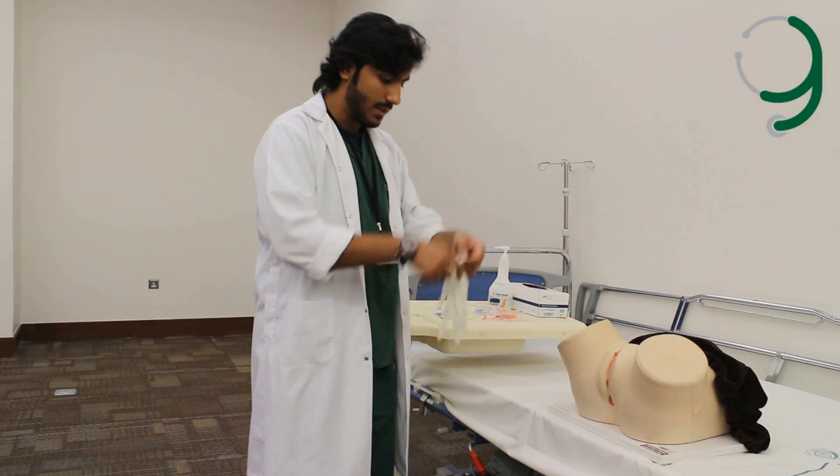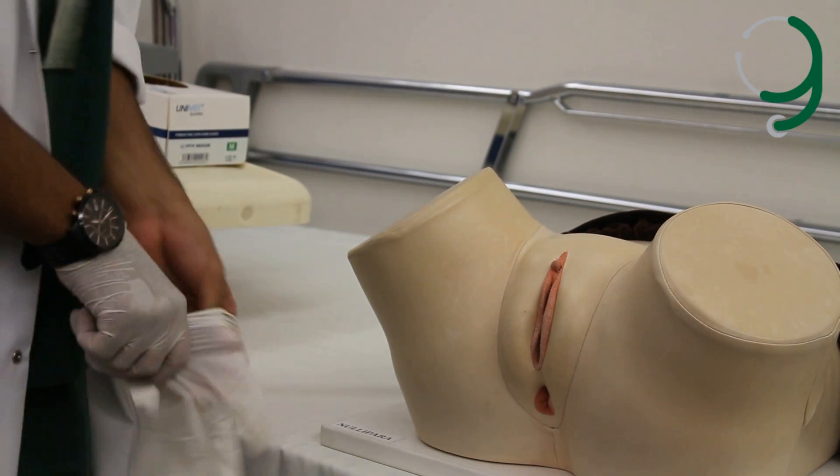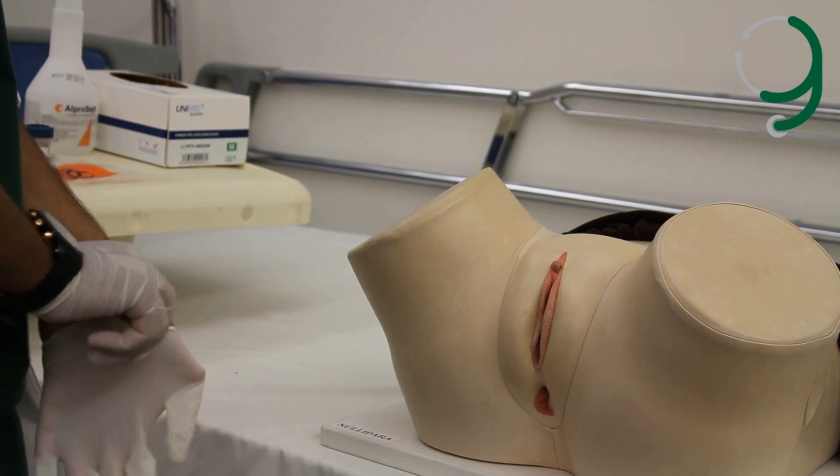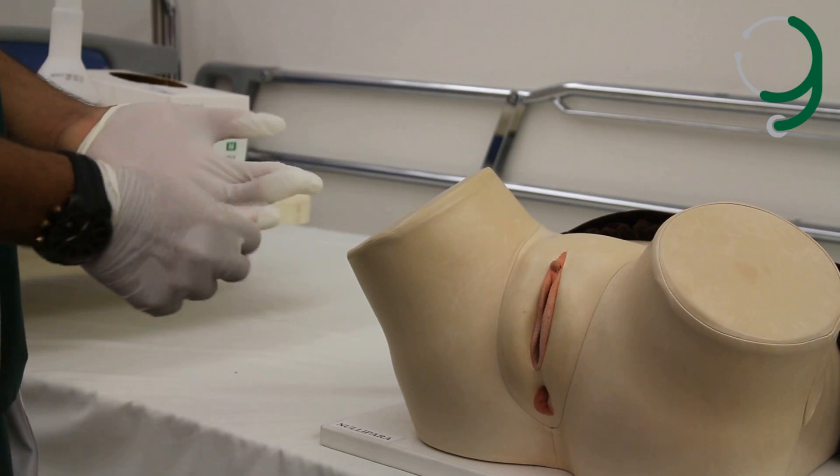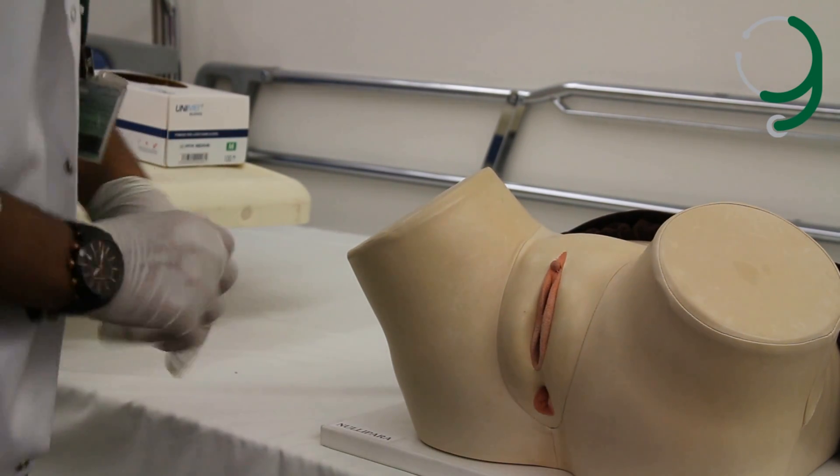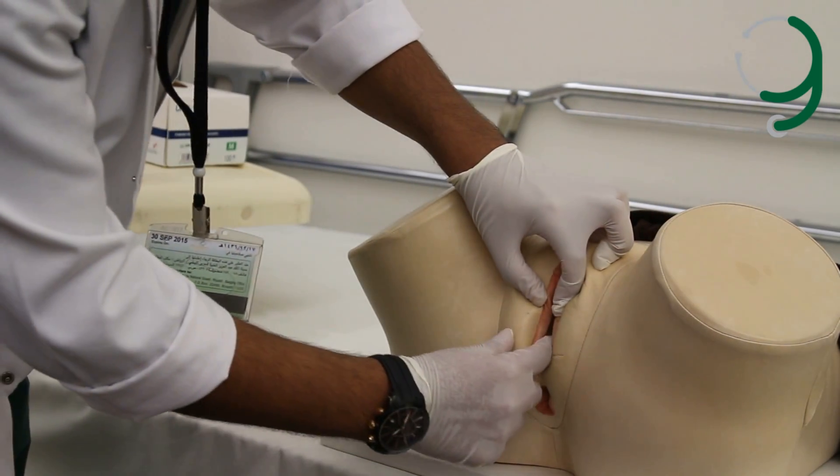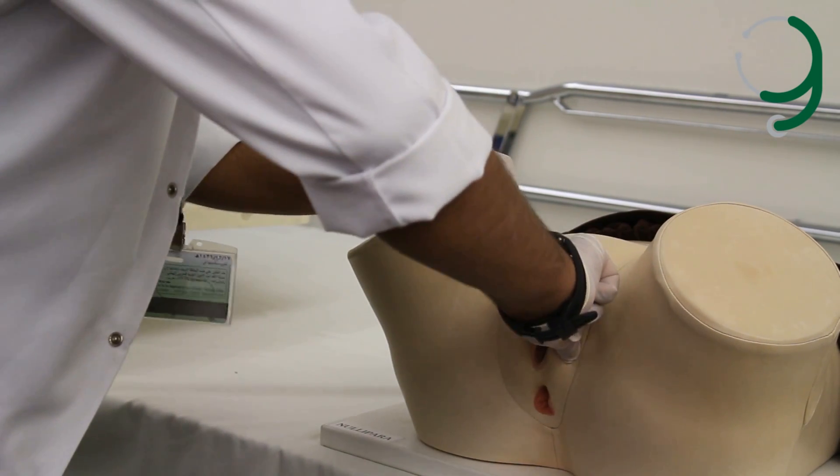To check for the Bartholin's gland, imagine the vagina as a clock. The Bartholin's gland is located at the 7 and 5 o'clock position. You have to ask the patient to tell you if she feels any discomfort while palpating the Bartholin's gland. To begin, you palpate at the 7 o'clock, like so. Do you feel pain? And then at the 5 o'clock, do you feel pain?